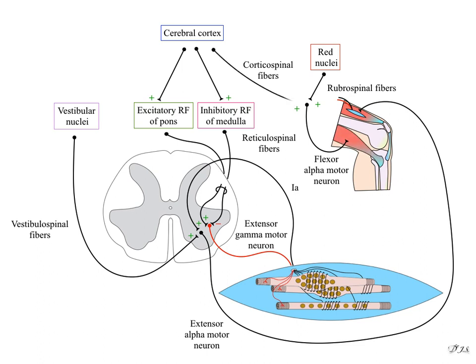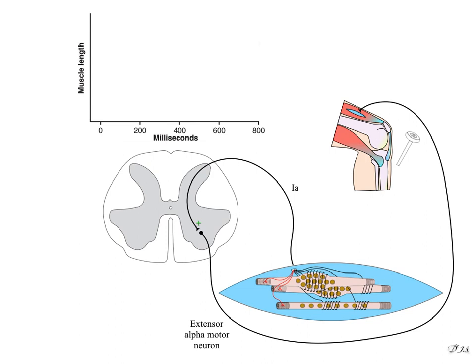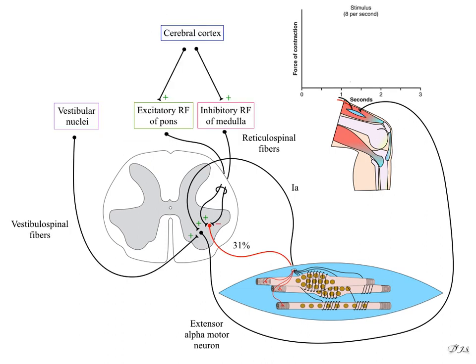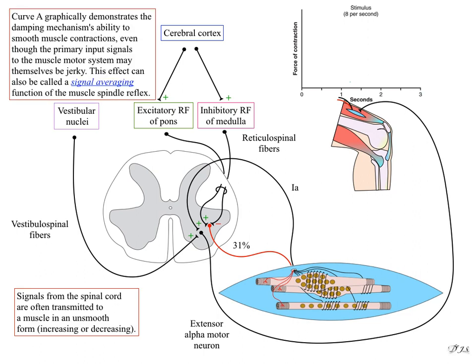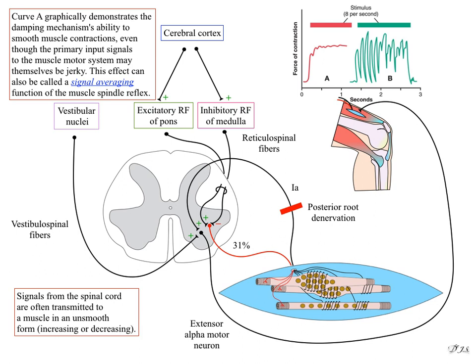When a hammer is struck to the patellar tendon, a characteristic graph is obtained between time and muscle length. Signals from the spinal cord are often transmitted to a muscle in an unsmooth, increasing or decreasing form. Curve A graphically demonstrates the damping mechanism's ability to smooth muscle contractions, even though the primary input signals to the muscle motor system may themselves be jerky. This effect can also be called the signal averaging function of the muscle spindle reflex.